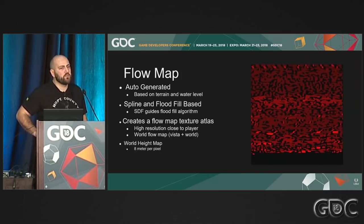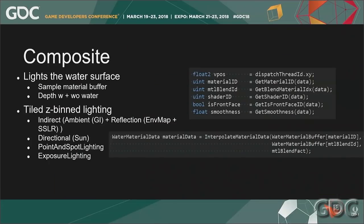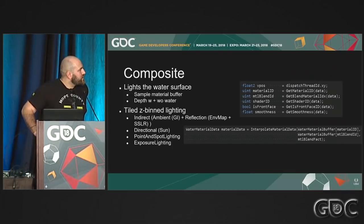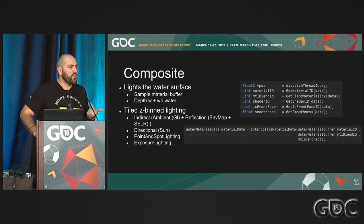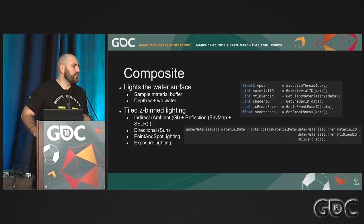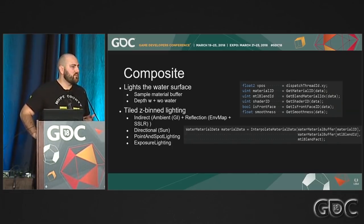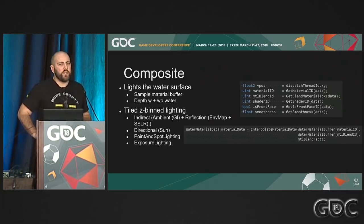We also bake a world height map; the low-resolution textures are eight meters per pixel. Now that we've generated everything needed for the water surface, we need to light it. Our water writes the correct depth, so we sample depth with and without water and all material IDs per pixel. We get the material ID and blend material ID per pixel — this is important because artists can place two rivers with very different materials and we need to gradually blend between them without discontinuities. We have a function that interpolates only the specific material properties required, avoiding unnecessary ALU waste.